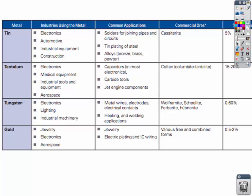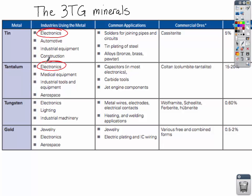Which minerals are we looking for in the Democratic Republic of Congo? You can think of it as the three TG minerals — tin, tantalum, tungsten, and gold. One common theme throughout all four of these metals is electronics, and in fact it's the number one use for three out of the four. The number one use for gold is jewelry, but all four of these metals are used across transportation, medical applications, lighting for tungsten, and jewelry with gold.